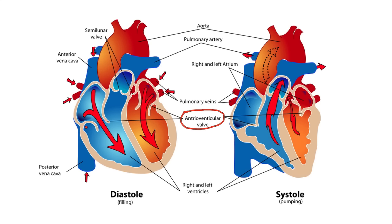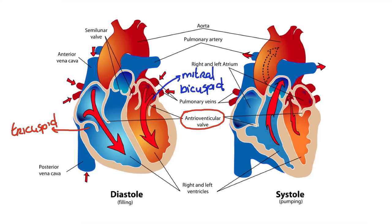Now on the right side, we also call this atrioventricular valve a tricuspid valve. We call it tricuspid because it has three cusps — in other words, three flaps. You're only seeing two here, but that's because this is a cross section. And then on the left side, we have what we call the left atrioventricular valve, which is also known as the mitral valve or the bicuspid valve. I'm giving you these different names so that if you go and read a textbook, you know exactly what it's talking about.